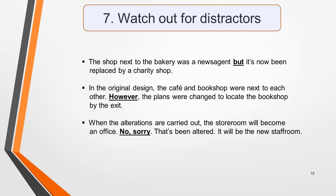The examiners may try and catch you out with distractors. A distractor is a word or phrase that changes or corrects the original piece of information given, so you may be given an answer and then have it taken away again. Here are some sample sentences containing distractors: 'The shop next to the bakery was a newsagent, but it's now been replaced by a charity shop.' 'In the original design, the cafe and bookshop were next to each other. However, the plans were changed to locate the bookshop by the exit.' 'When the alterations are carried out, the storeroom will become an office. No, sorry, that's been altered — it will be the new staff room.' The use of BUT and HOWEVER are particularly common distractors, but many different words and phrases can be used. So be alert for them.